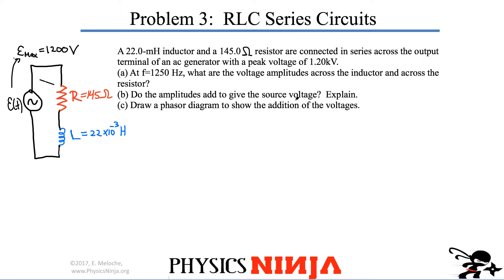Alright, here's problem 3. A 22 millihenry inductor and a 145 ohm resistor are connected in series to the output terminal of an AC generator that has a peak voltage of 1.2 kilovolts, or 1,200 volts.